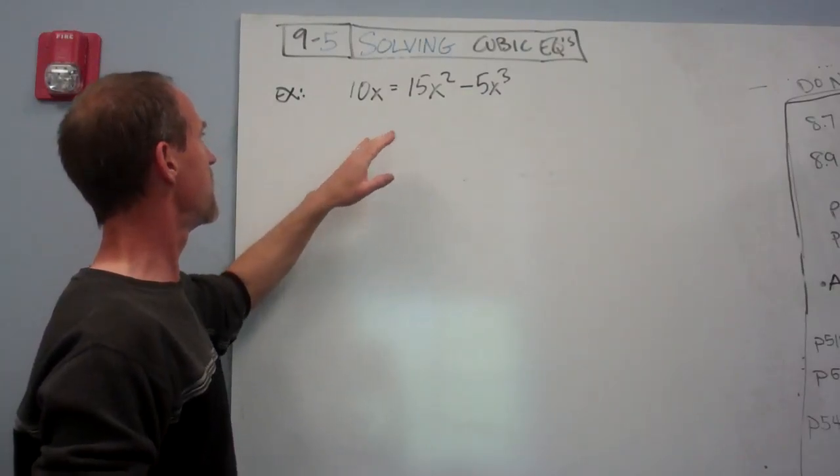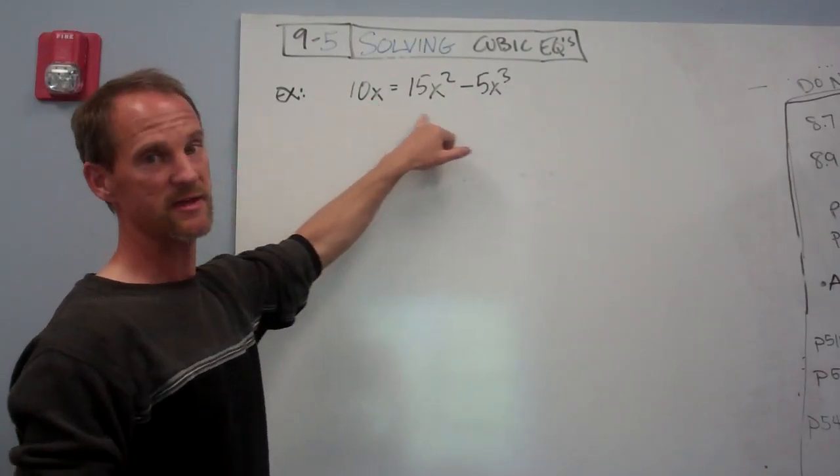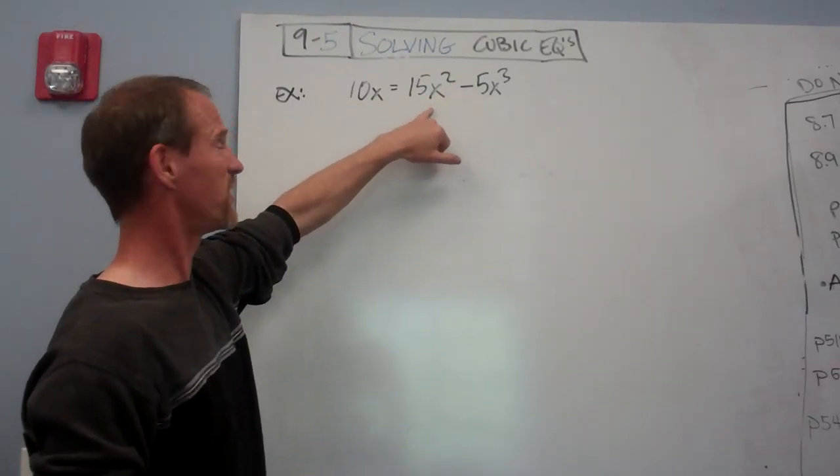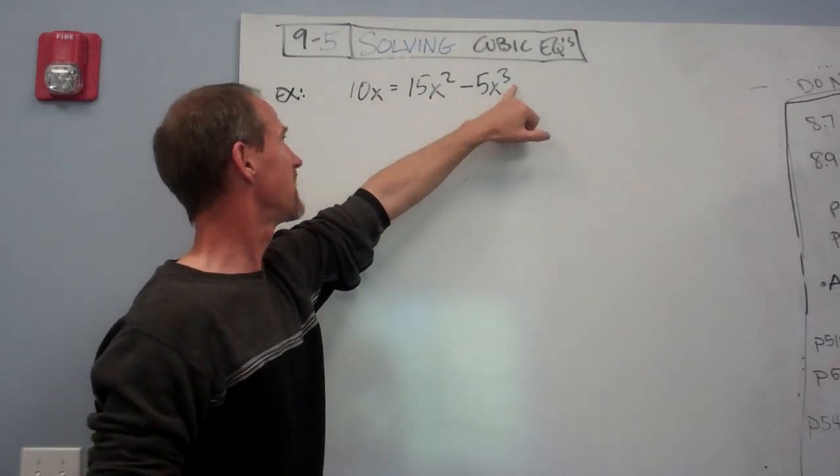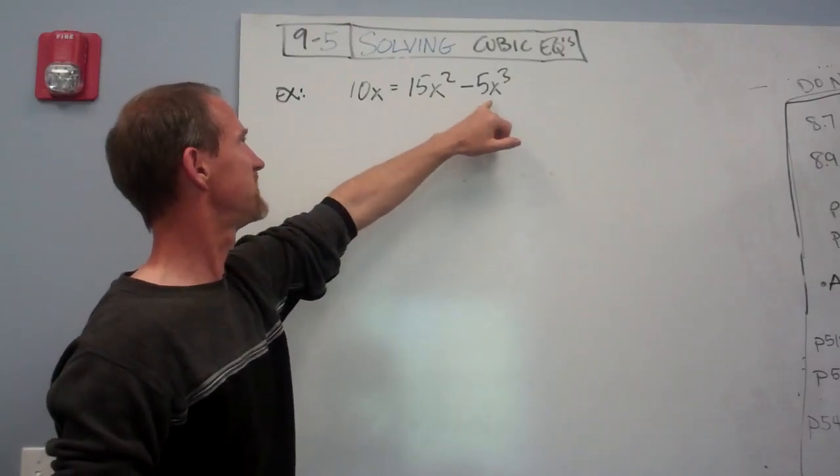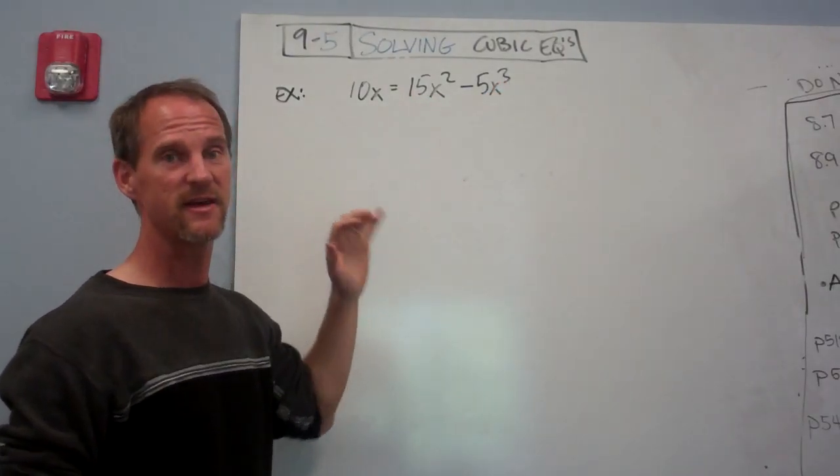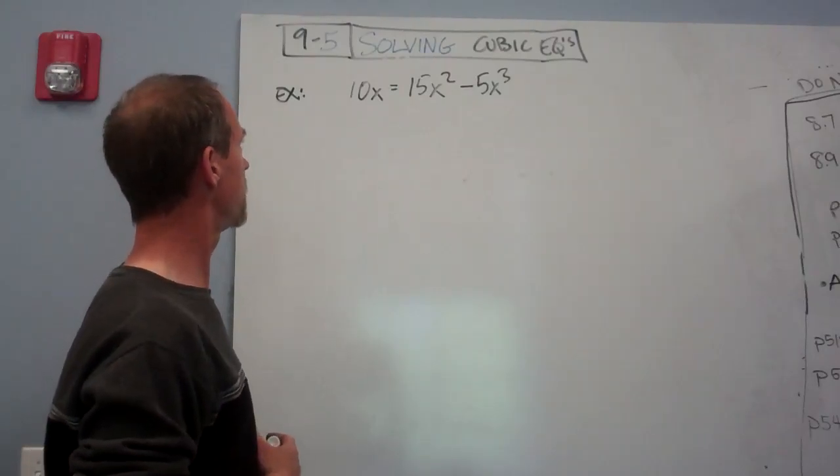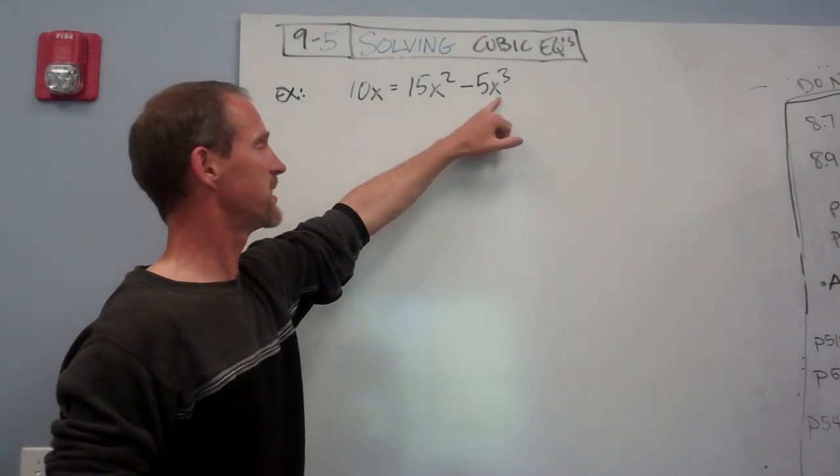So maybe you think that if I plug in 3, that will make a true statement. So if I plug in 3, I get 30. Plug in 3, I get 27 times 15. Sorry, 9 times 15 and then 27 times negative 5. It's not going to work out. But there are some values for x that do work when I plug them in.